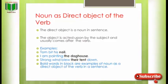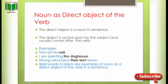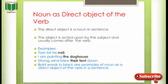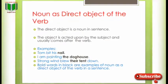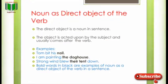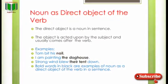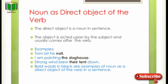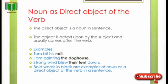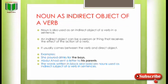Noun as direct object of the verb — the direct object is a noun in a sentence; the object is acted upon by the subject and usually comes after the verb. Examples: 'Tom cut his nail.' 'I am painting the dog house.' 'Strong wind blew their tent down.' Direct object سے مراد یہ ہے کہ subject کا direct action جو ہوتا ہے وہ direct object کے اوپر ہوتا ہے۔